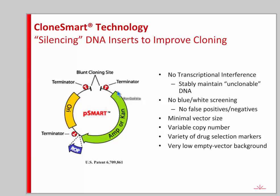We have several different versions of this vector: either ampicillin or kanamycin resistance, or high or low copy number. To achieve a lower copy number, some versions of the vector have the ROP gene — repressor of primer — which represses the origin of replication to give a more PBR-type copy number, approximately 10 to 15 copies per cell.